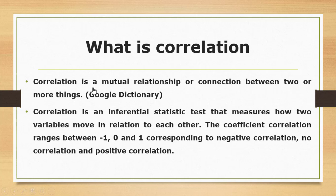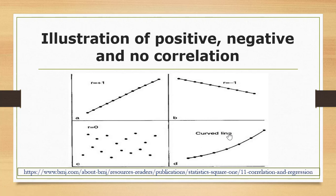So what is correlation? A correlation is a mutual relationship or connection between two or more things, as defined by Google Dictionary. It is an inferential statistic test that measures how two variables move in relation to each other. The correlation coefficient ranges between negative one and one, corresponding to negative correlation, no correlation, and positive correlation respectively.